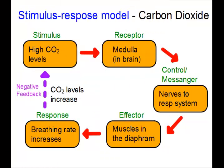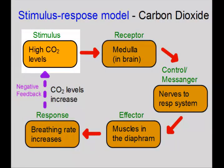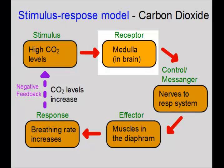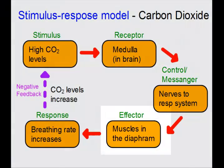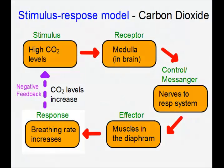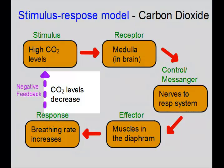Let's look at carbon dioxide levels. With high carbon dioxide levels, the receptor is some cells in the brain. The message is controlled quite quickly by nerves going directly to the respiratory system. The effector is the muscles in the diaphragm, which start moving quicker, and the response is an increased breathing rate, which causes the carbon dioxide levels to decrease.